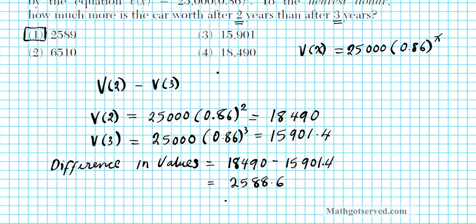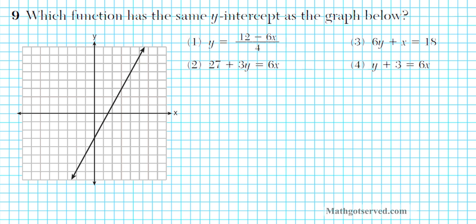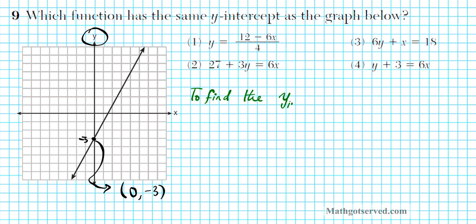Let's move on to problem 9. It says: which equation has the same y-intercept as the graph shown? The y-intercept is where the graph crosses the y-axis, which is at negative 3 — the coordinate is (0, negative 3). Notice the x-coordinate is 0. That is the key: to find the y-intercept, set x equal to 0.